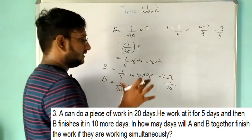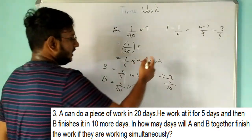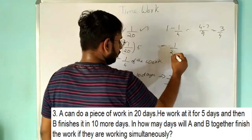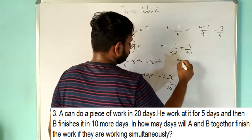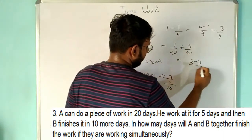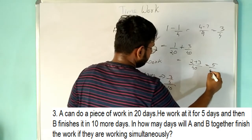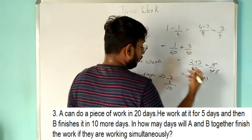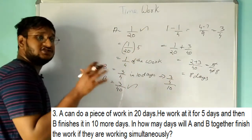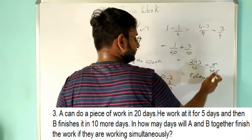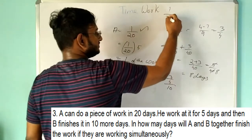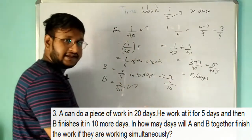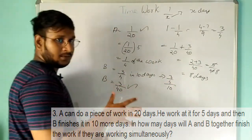Working simultaneously: 1/20 + 3/40. Converting to a common denominator of 40: 2/40 + 3/40 = 5/40 = 1/8. So 1/8 of the work per day means they complete the work in 8 days when working together. Since 1/X of work per day means X days, here 1/8 per day means 8 days.